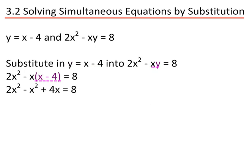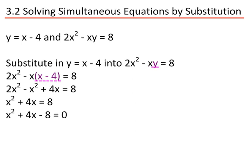Expanding the brackets, we have 2x squared minus x squared plus 4x equals 8, which gives us x squared plus 4x equals 8. Subtracting 8 from both sides, we have x squared plus 4x minus 8 equals 0.